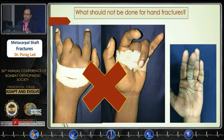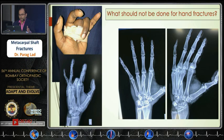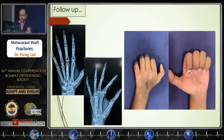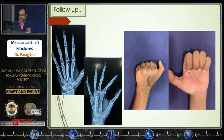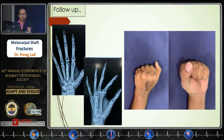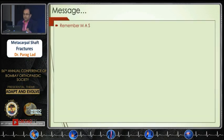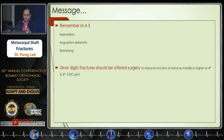What should not be done for a hand fracture is strapping like this and expecting union, because it will cause problems not only at the MCP joint but also at the PIP joint. Once you fix them properly and achieve proper angulation correction with maintained length, they can have adequate function.